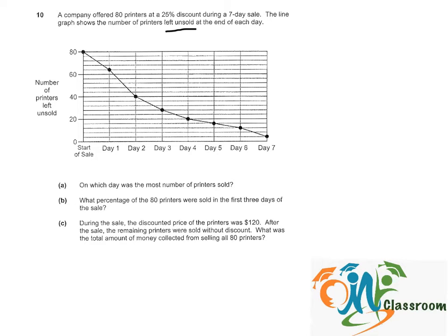Meaning at the start of the sale, we have 80. And after day 1, we have 64. And after day 2, we have 40.